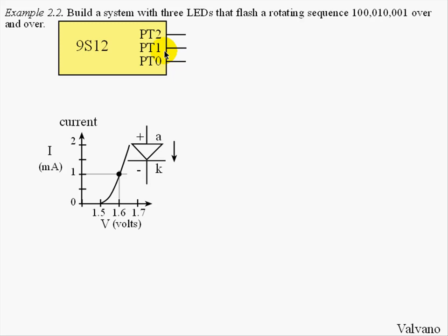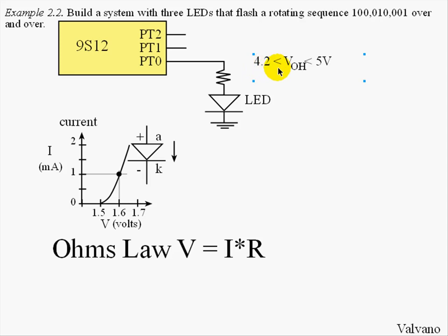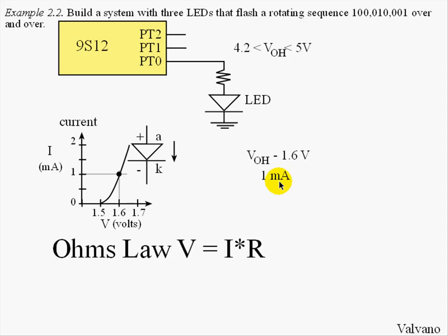We have three LEDs so we'll use three pins on port T. The LED is a diode and essentially the voltage will be about 1.6 volts regardless of how much current we have. In order to interface the LED we'll use Ohm's law. We will connect one of the LEDs to port T bit zero. When the output is high, this voltage will be somewhere between 4.2 and 5 volts, meaning the voltage across the resistor will be VOH minus 1.6. If the desired current through the LED is 1 milliamp, we can calculate the resistance needed using Ohm's law.